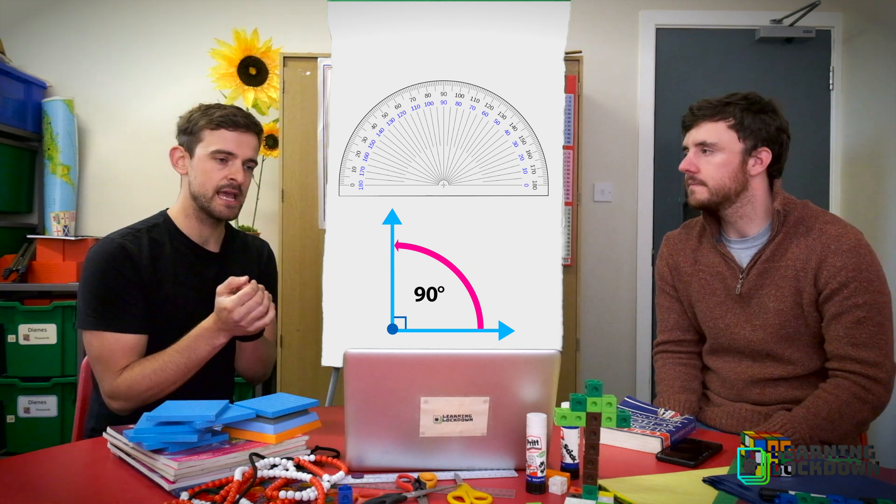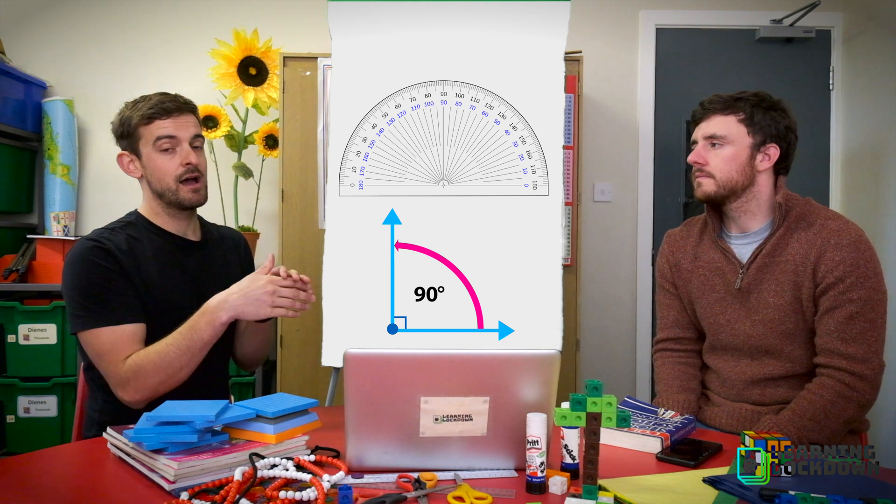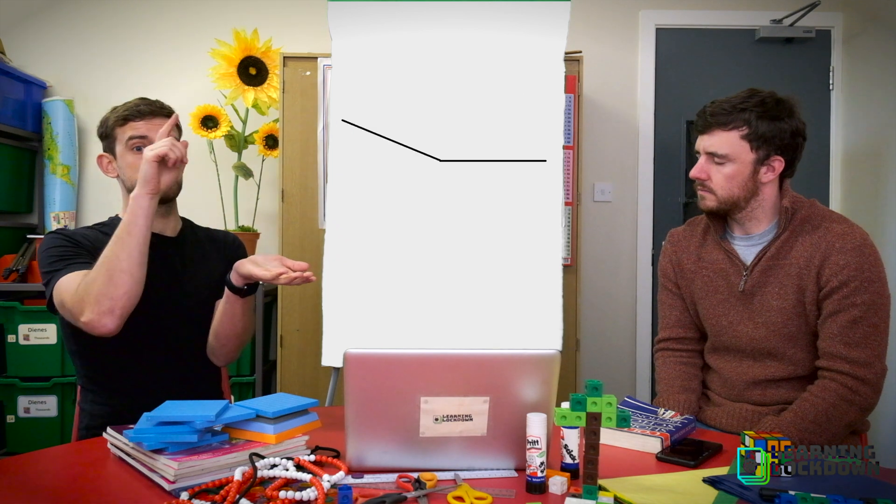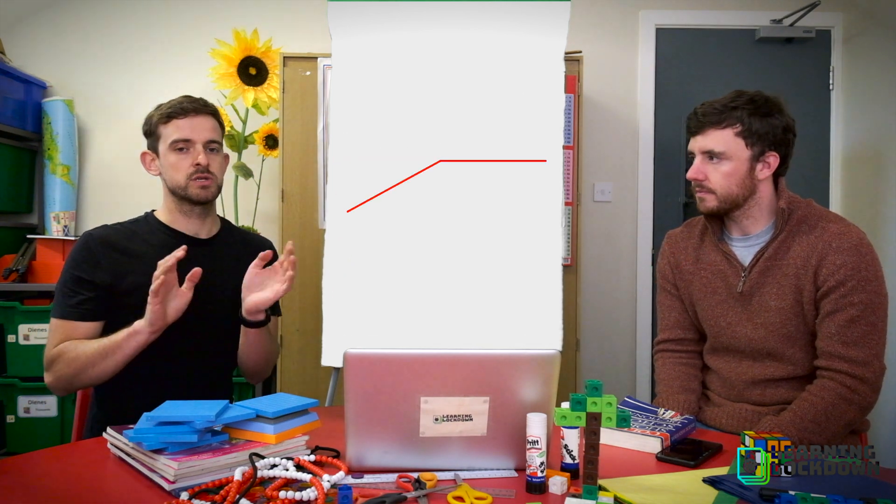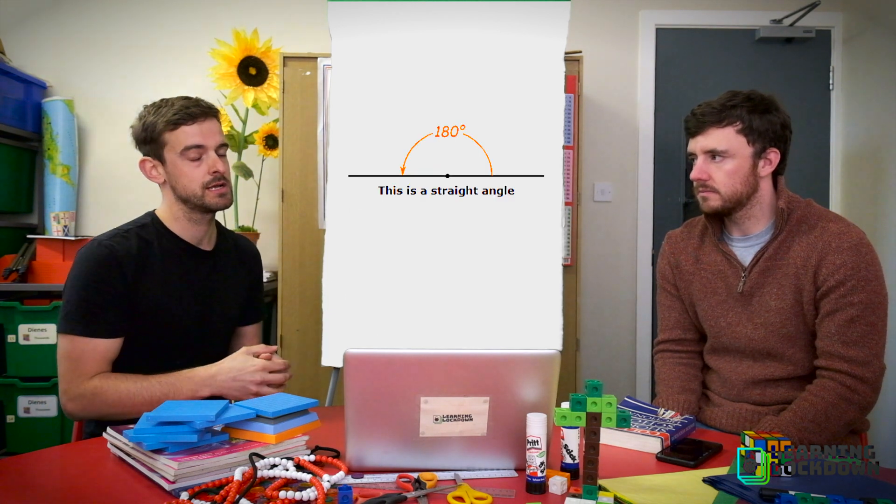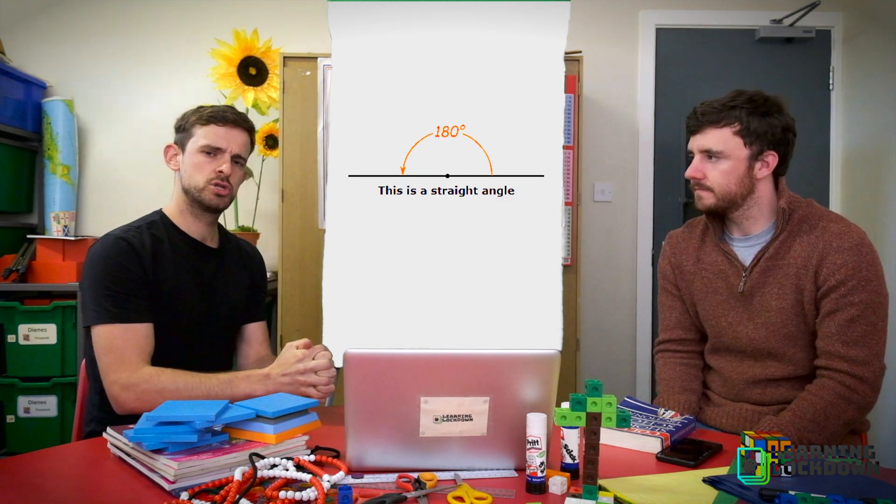Now just for a disclaimer, today we're not looking at angles that are even bigger than a straight line because believe it or not you can have angles that go further than a straight line. But we're not looking at those today, we're just going up to angles that are 180 degrees or something as a straight line. So the two names, let's start with the smaller than 90 degrees Mr S. What do you know about these angles?